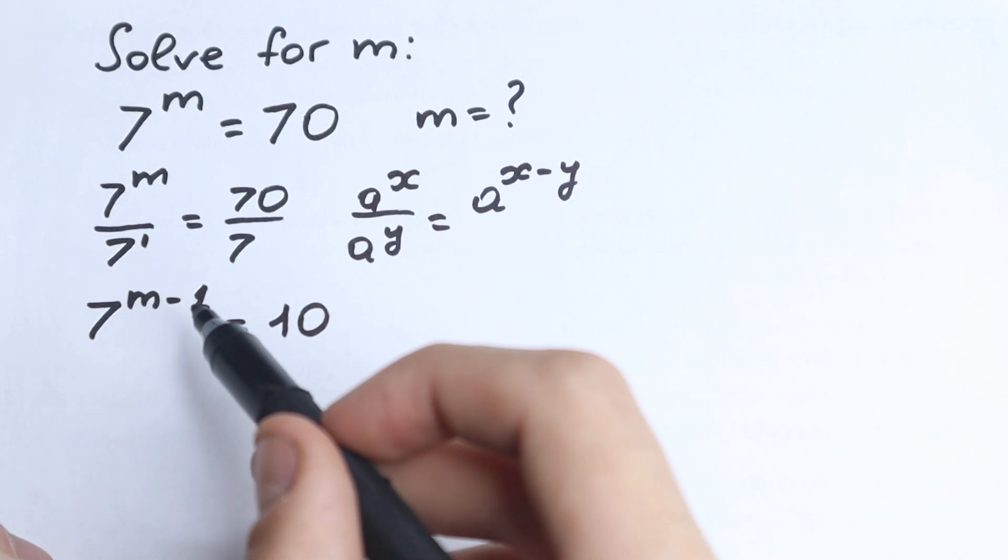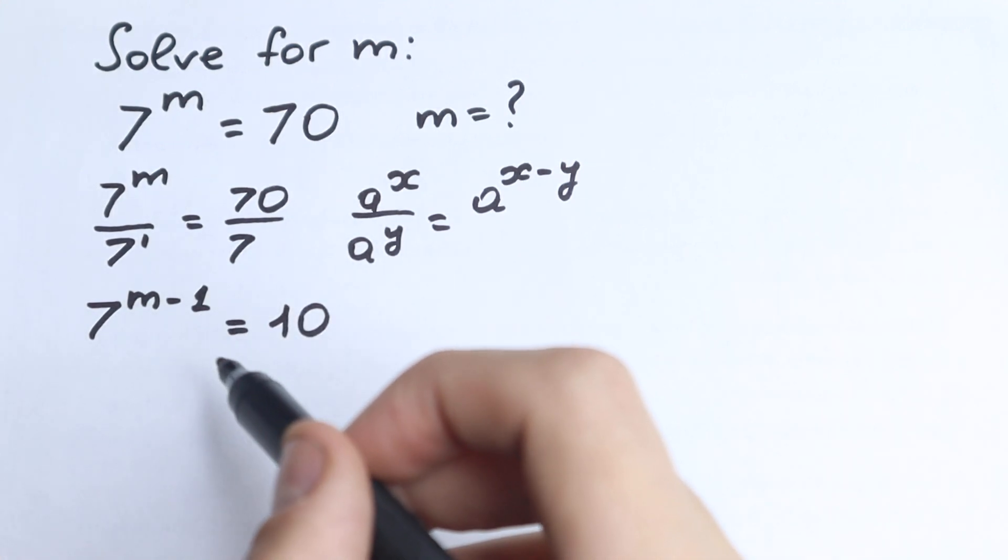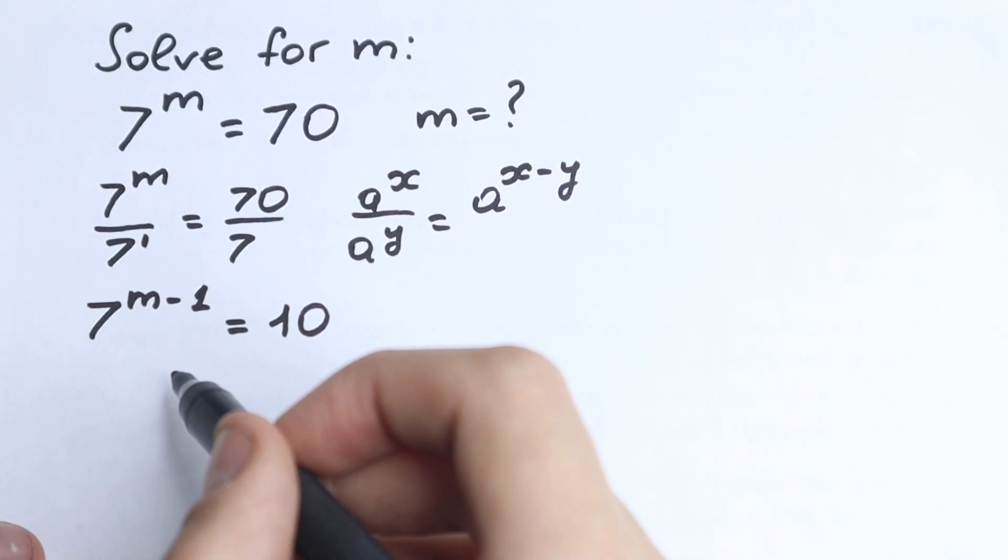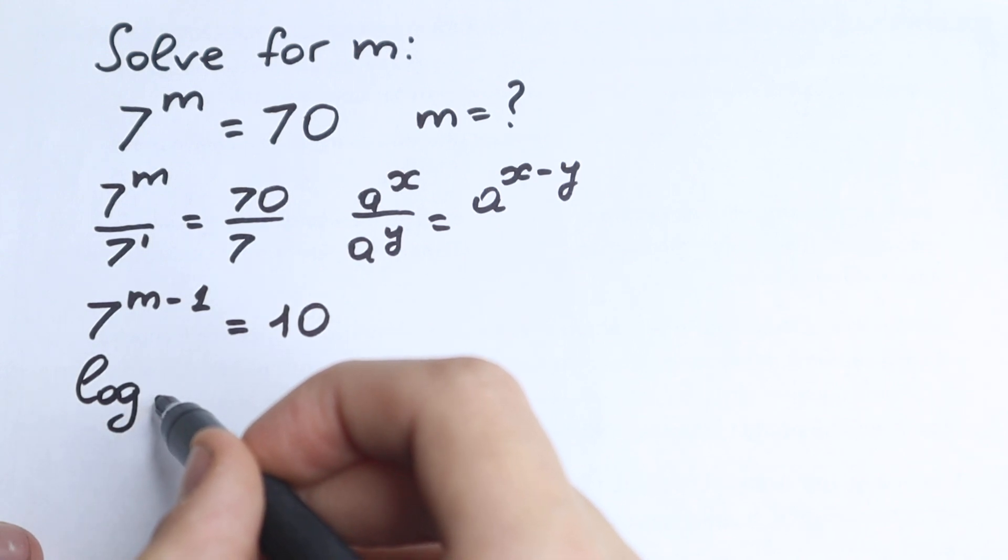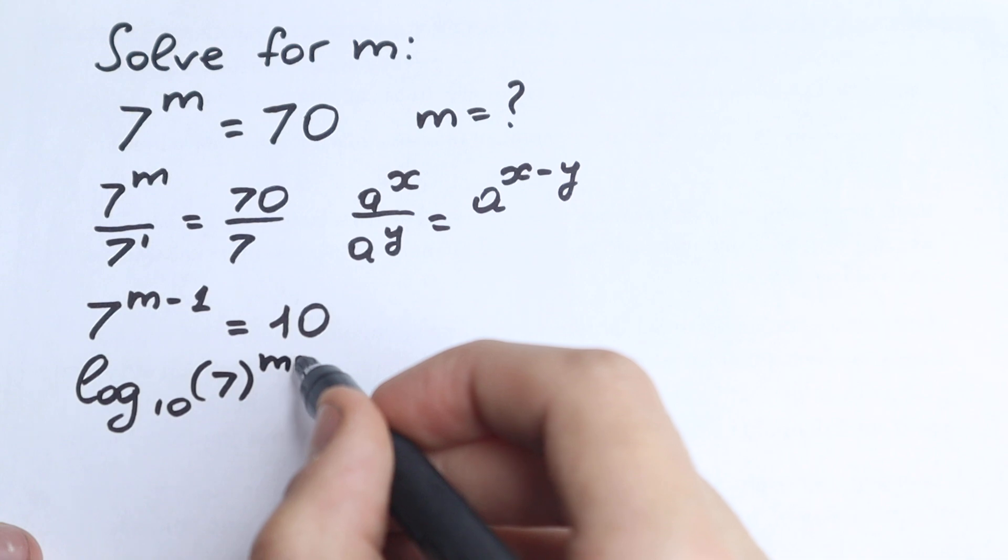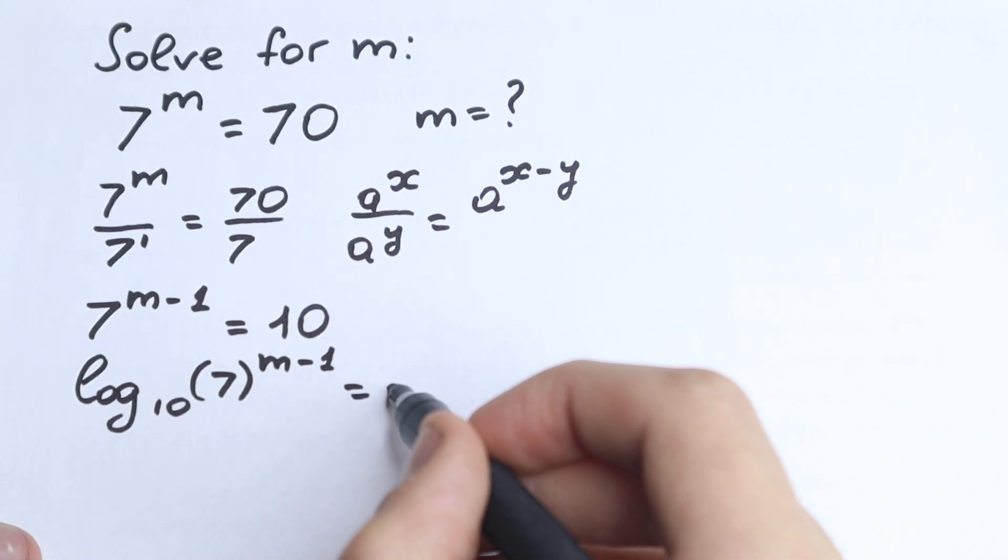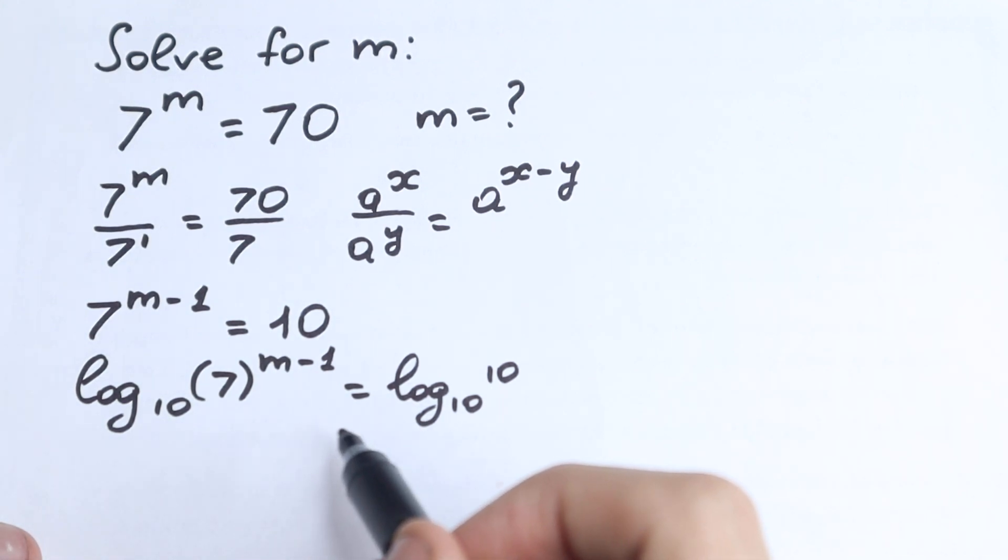Right here, if we have powers, it's really great to know about logarithms. Let's apply log on both sides, log base 10 obviously. So we have log base 10 of 7 to the power m minus 1 equals log base 10 of 10. This is the second step, we just applied log on both sides.